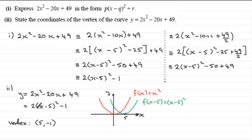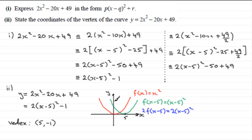Next we introduce the factor of 2, giving 2 times (x minus 5) squared. Multiplying a function by 2 stretches the graph by a scale factor of 2 parallel to the y-axis, with the x-axis invariant. So the point at (5, 0) doesn't move, but the graph becomes steeper — other points are doubled in height.